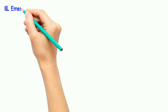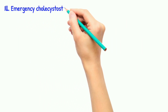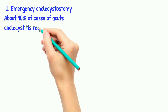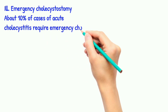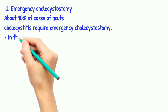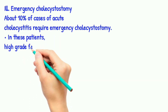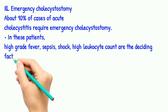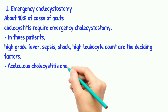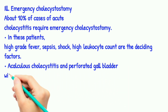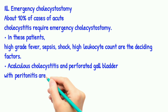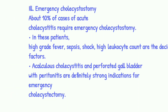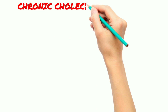Emergency cholecystectomy is required in about 10% of acute cholecystitis cases. High-grade fever, sepsis, shock, and high leukocyte count are the deciding factors. Acalculous cholecystitis and perforated gallbladder with peritonitis are definite strong indications for emergency cholecystectomy.